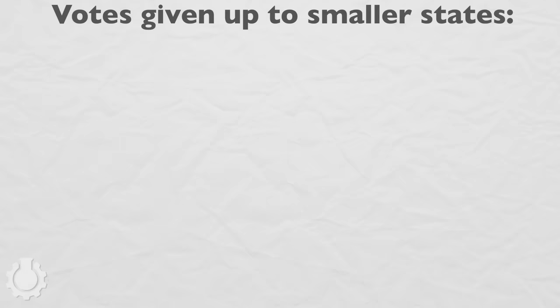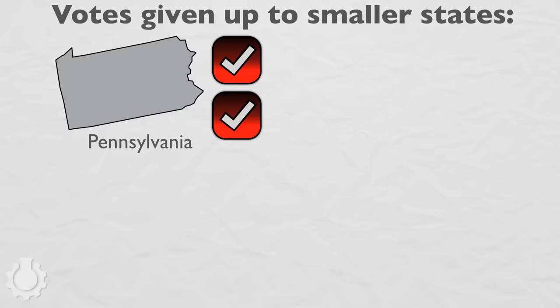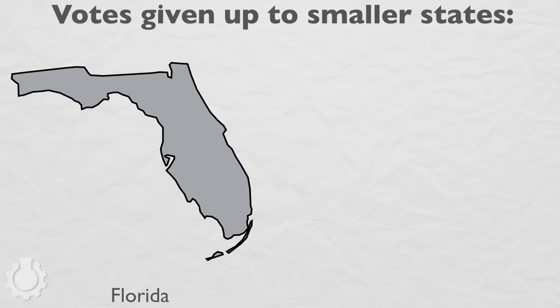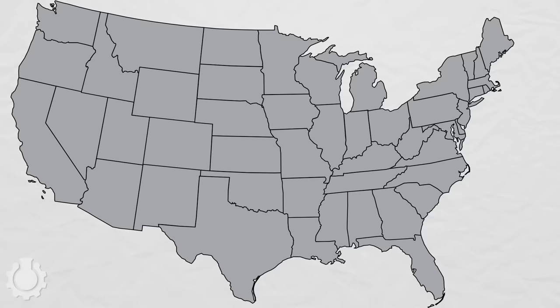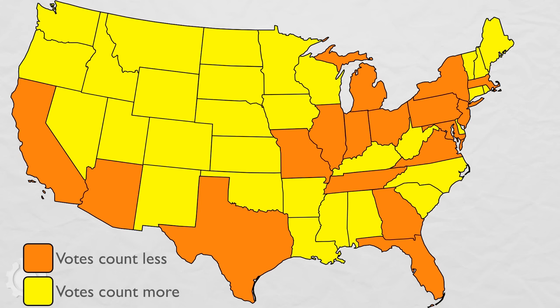So, Georgians, Virginians, Michiganders, and Jerseyites are each missing one vote. Pennsylvanians, North Carolinians, Ohioans, and Hoosiers are missing two. Floridians are missing four, New Yorkers five, Texans six, and Californians are ten votes short of what they should get. Because of this vote redistribution, the Electoral College essentially pretends that fewer people live where they do, and more people live where they don't. An American who lives in one of these states has their vote for president count for less than an American who lives in one of these states.